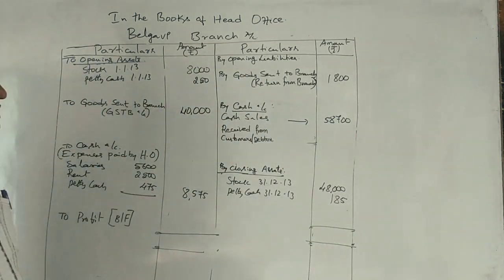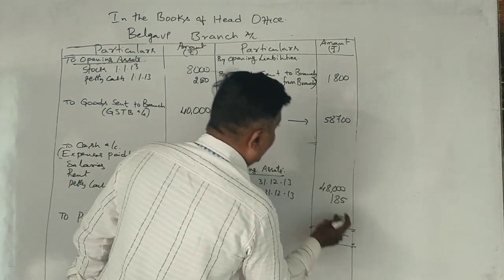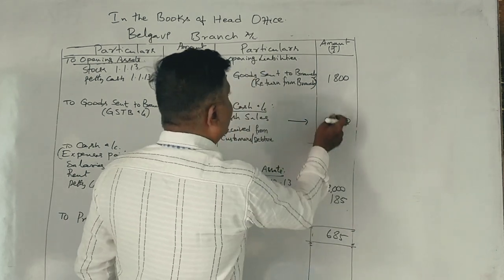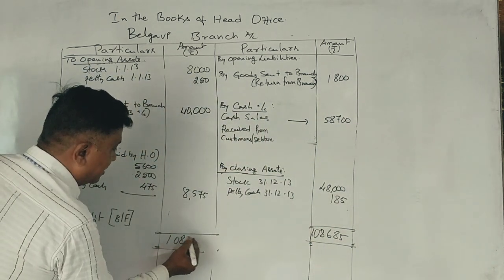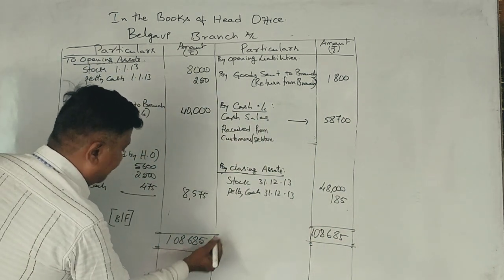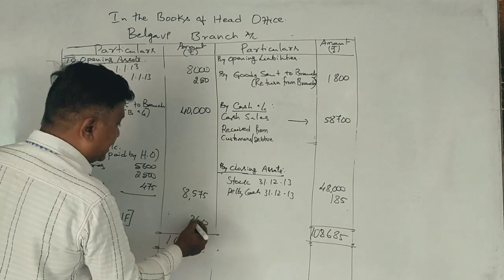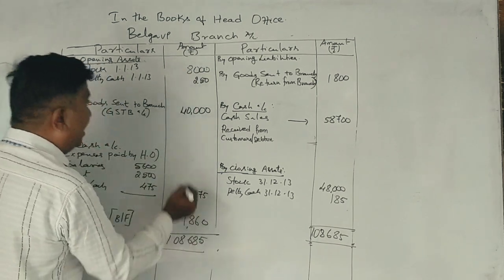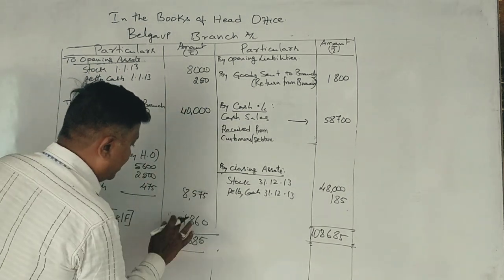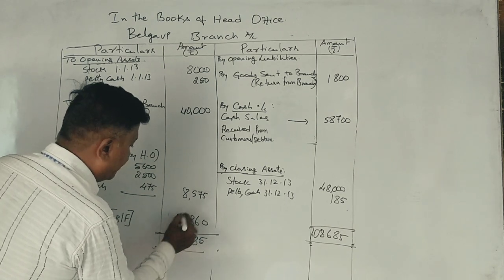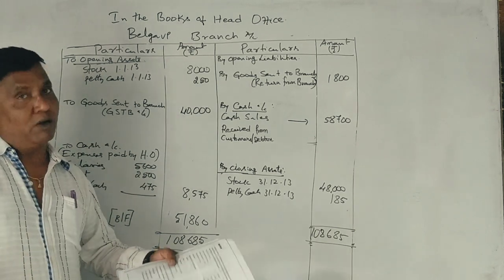Now check the totals — which side is more? So we calculate: 1, 8, 16, 1 carry 9, 17, 18, 1 carry 5, 10 — totaling 1 lakh 8,000. Profit: 6, 18, 5. 6 plus 2 is 8, plus 8 is 16, 9, 17, 18. Total: 51,860. Correct. So the total is 51,000 — it's a simple question.